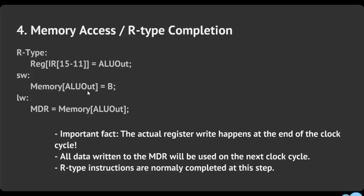For store word, you go into memory using the specific address you just computed and set that memory location equal to the value in B. As you can see, in step three you computed that address, and now in step four you go into memory using that address and store the word from B.